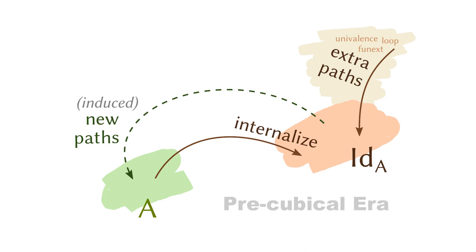What we actually wanted to do is to modify the path directly. So we want to modify the universe to make it univalent; we want to modify the circle directly so that it has a loop. But we are not able to do it. So instead, we are changing the identification types of them. And that's the problem, because identification types are not ready for this modification, and only the original types know how to deal with these extra paths.